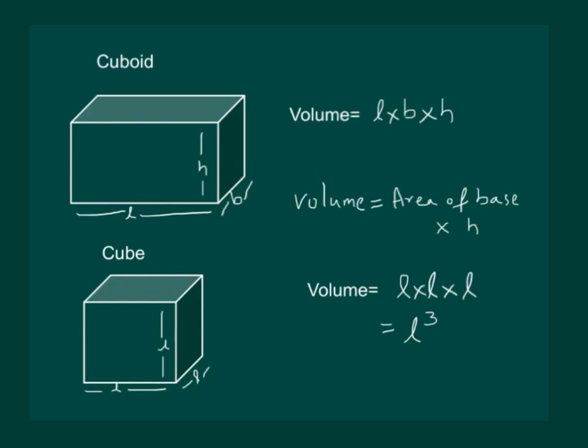Clearly, in the volume of a cuboid we have length into breadth which is the area of the base multiplied by height. And similarly, in case of a cube, we have length into length which is the area of the base into L which is the height. So we can also define volume as area of the base into height.